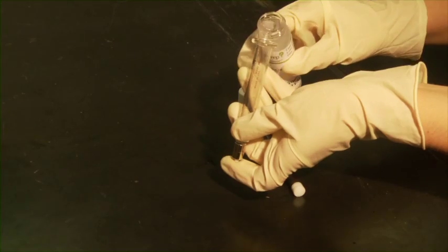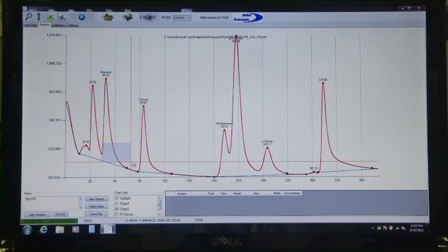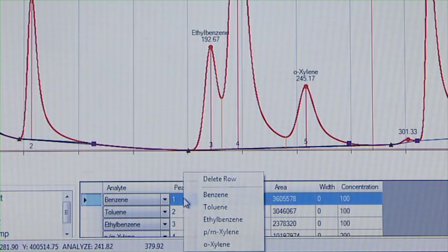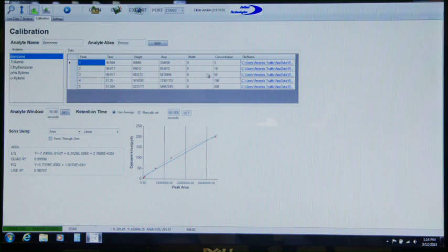Run all five standards from low to high. Integrate the peaks, enter the concentration, and assign analyte names after each run. All the calibration data for each analyte can now be viewed in the calibration window.